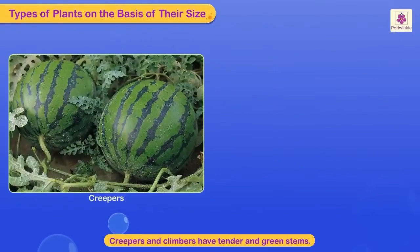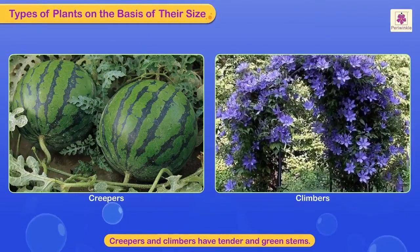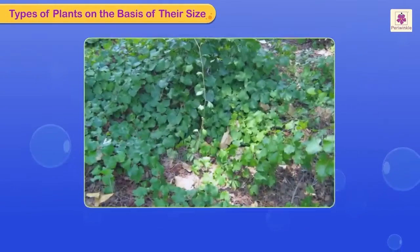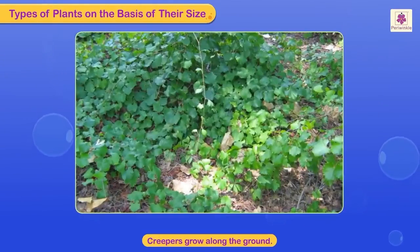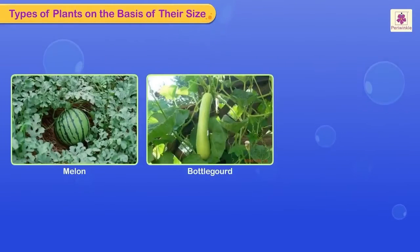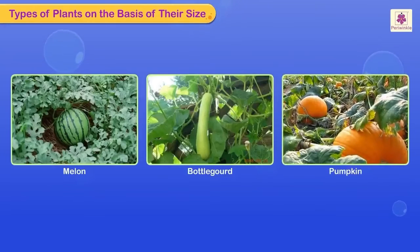Creepers and climbers cannot stand erect as they have tender and green stems. Creepers grow along the ground. Melon, Bottle Gourd, and Pumpkin are some creepers.